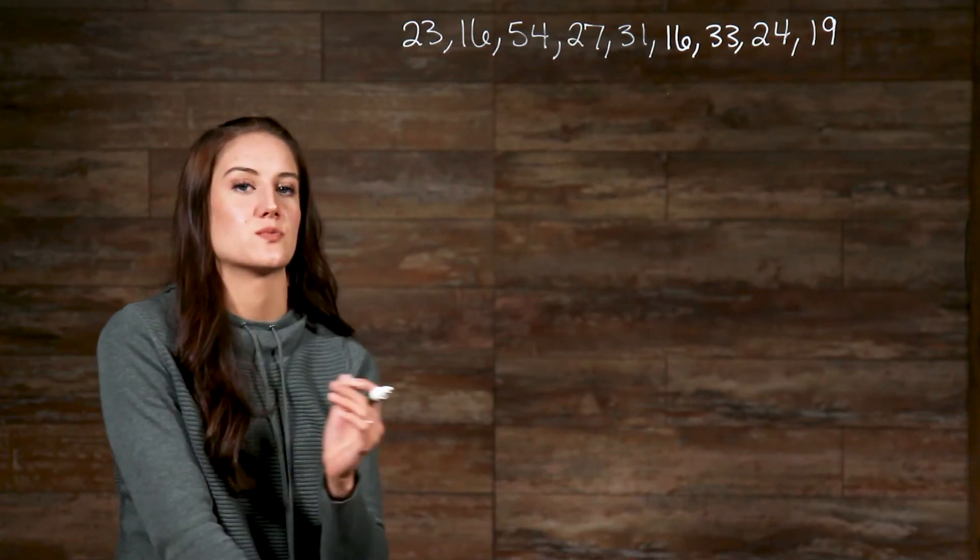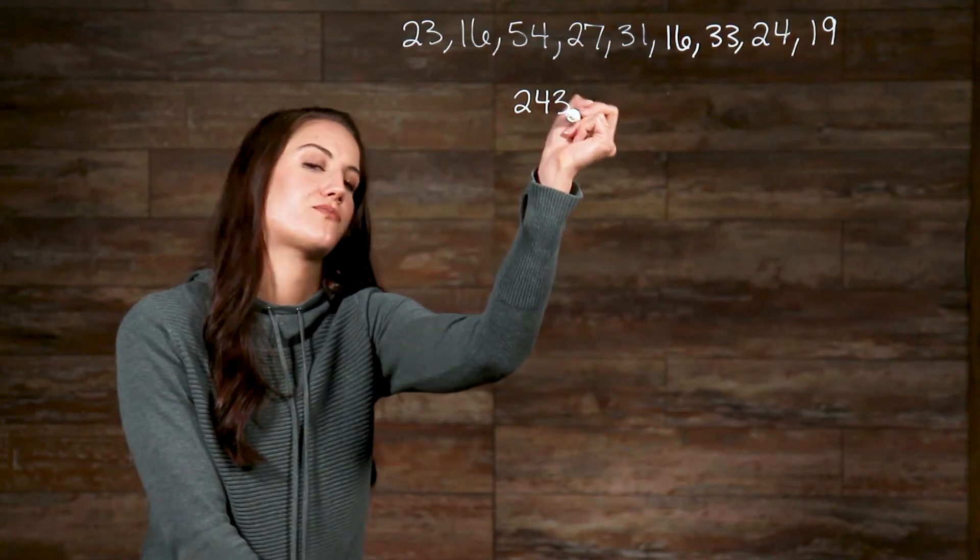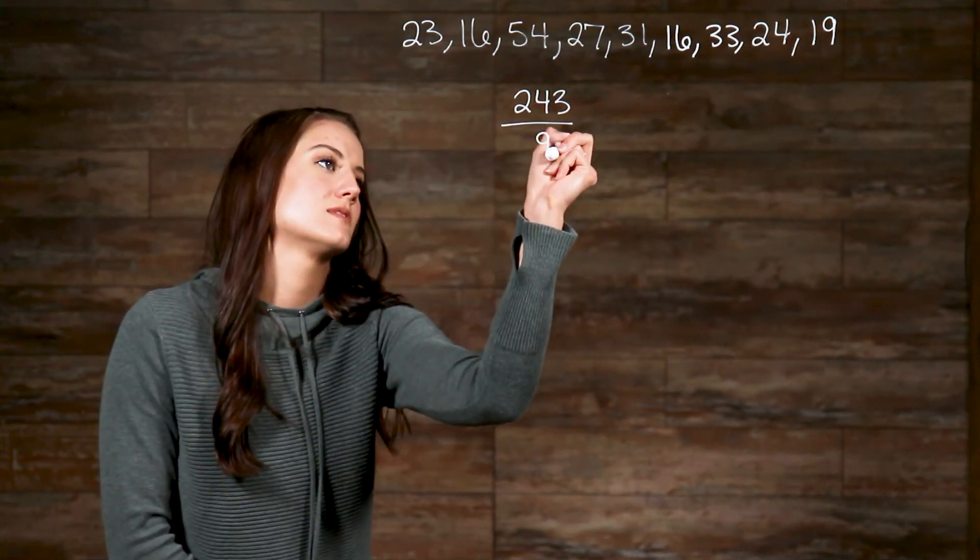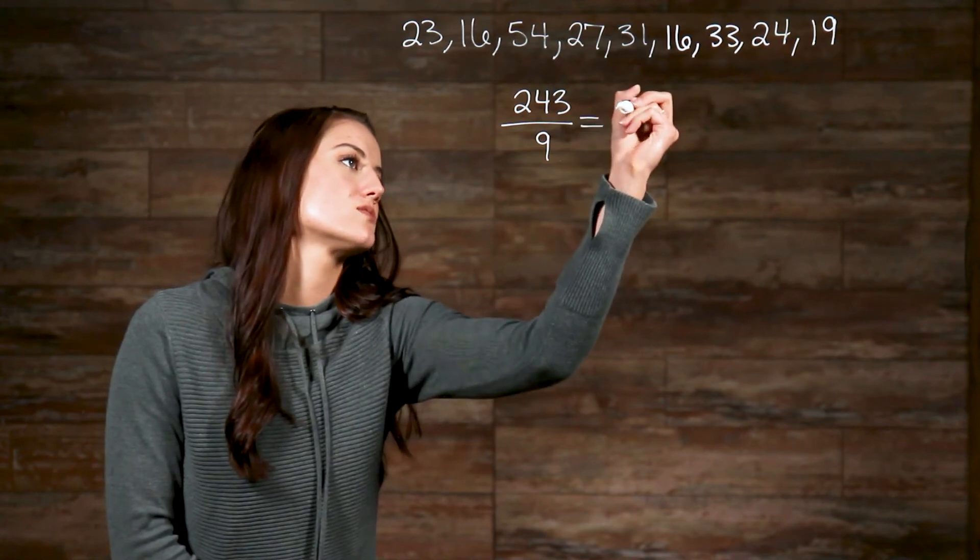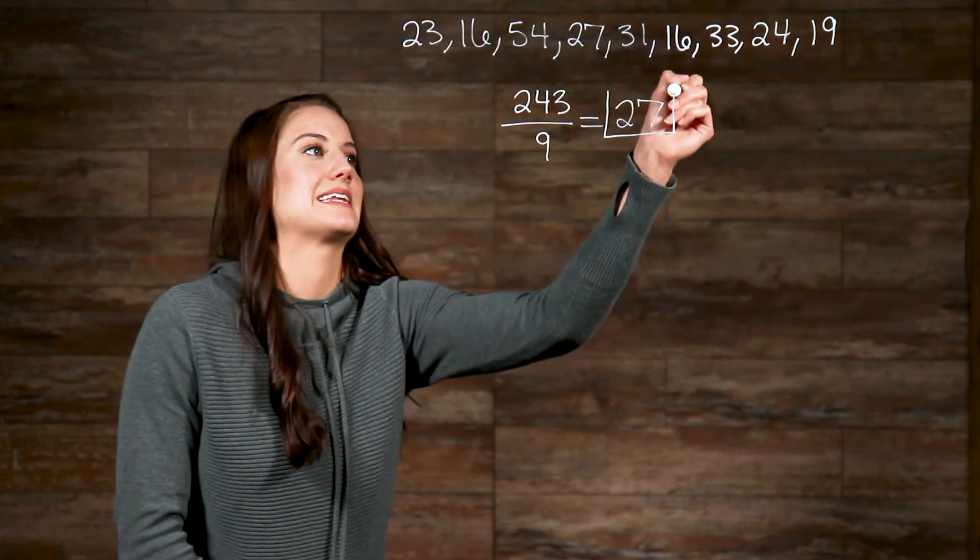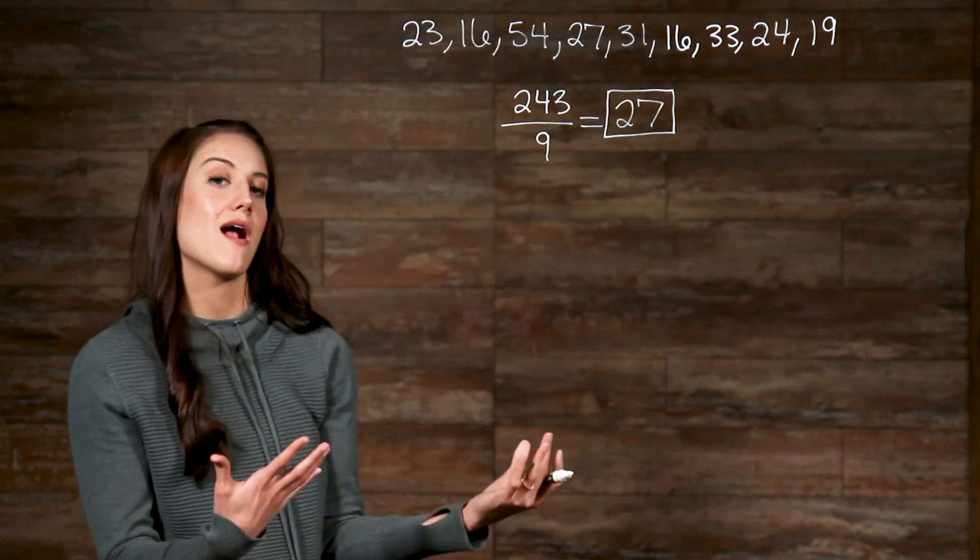When we add up all the numbers, we get 243. So, now we take this number and divide it by nine to get 27. And that is all there is to finding the mean. You add up all the numbers on the list, then divide by how many numbers there are.